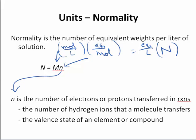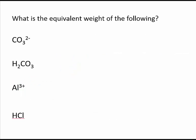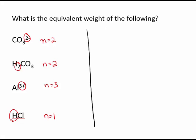The equivalent number, little n, is equal to the number of electrons or protons transferred in reactions. You can think of it as the number of hydrogen ions a molecule transfers, or the valence state of an element or compound. For the carbonate ion, n equals 2. For carbonic acid, which has two hydrogens, n is also 2. For aluminum ion, n equals 3 (the valence state). For hydrochloric acid, there is one hydrogen, so n equals 1.